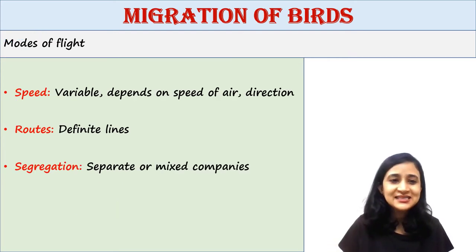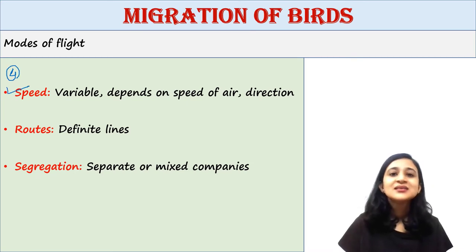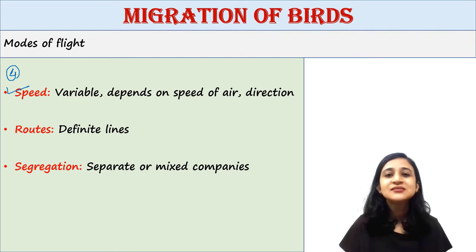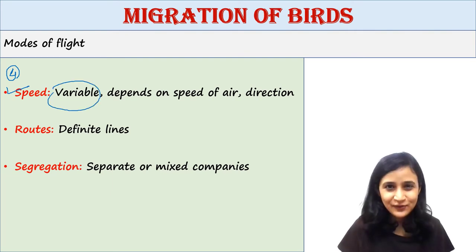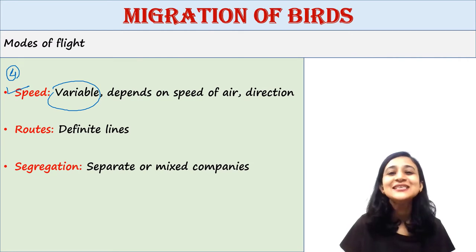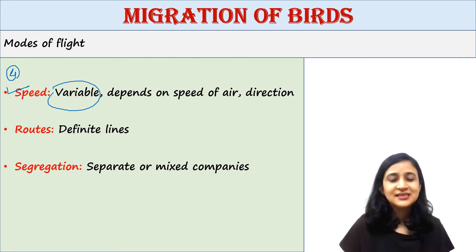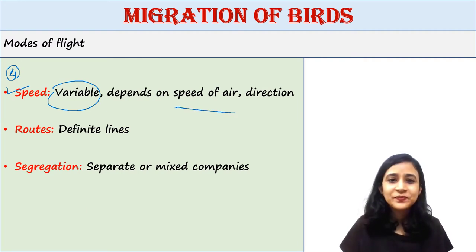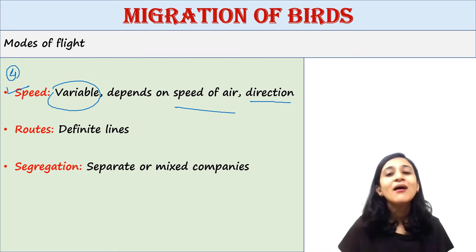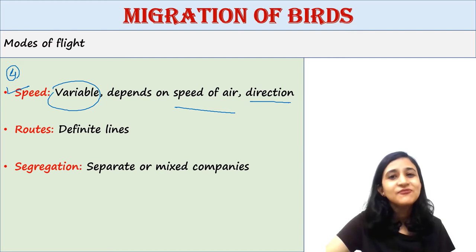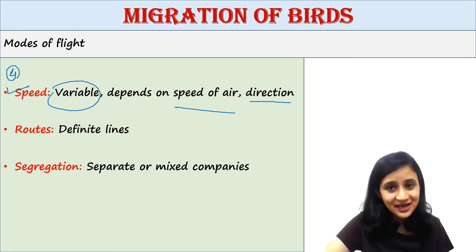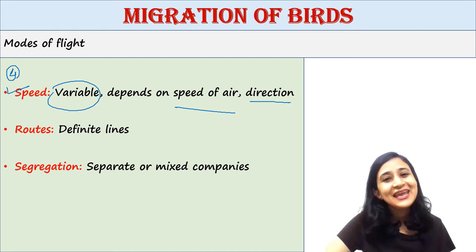Next is speed. The speed of flight of migratory birds varies from individual to individual and species to species. It is also affected by factors like the speed of air and its direction. Birds generally travel faster during their migration than at any other time.